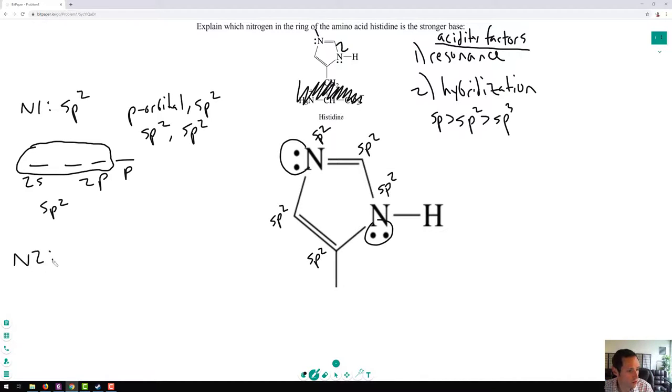Now, nitrogen 2, also sp2 hybridized. We know that. There's no double bond adjacent to this nitrogen, so there's no p orbital being taken up by a bond right there. However, this sigma bond is an sp2 orbital hybridized. This bond is sp2 hybridized as well. This NH bond is also sp2 hybridized. So what does that leave us with? That leaves us with a p orbital, because there's three sp2 hybridized orbitals and there's one p orbital for an sp2 hybridized bond. So that means that this lone pair has to be in a p orbital.